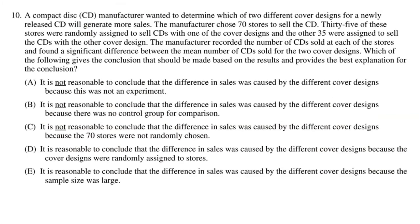Next question: a CD manufacturer wanted to determine which of two cover designs for a newly released CD will generate more sales. The manufacturer chose 70 stores — 35 were randomly assigned to sell CDs with one cover design and the other 35 with the other cover design. The manufacturer recorded the number of CDs sold at each store and found a significant difference between the mean number of CDs sold for the two cover designs. So we have two samples of 35 stores, each with a mean, and there is a significant difference.